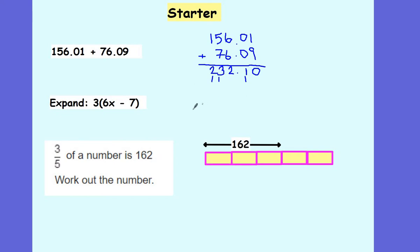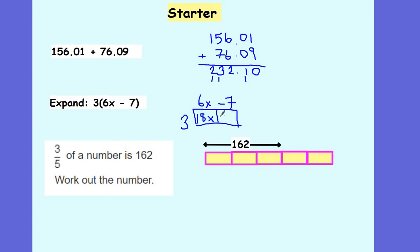Expanding this bracket, the first thing I'm going to do is draw out the grid. I put the 3 on the outside and the 6x take away 7 along the top. 3 times 6x gives me 18x. 3 times negative 7 gives me negative 21. So altogether we've got 18x subtract 21.